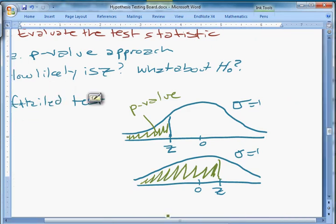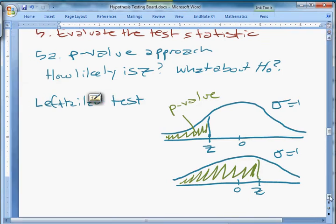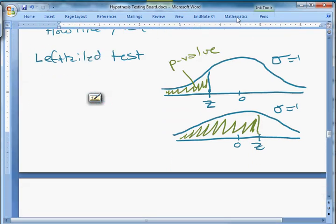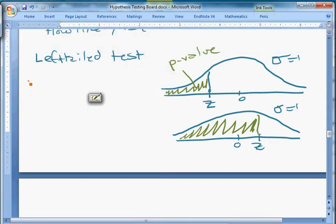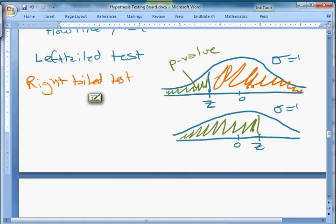For right-tailed test, it's just the opposite. Right-tailed test, the p-value is going to be this area. It's the area towards the right tail. Here it's this. It's the size of the right tail. That's why they call it a right-tailed test. So is the right tail big or small?